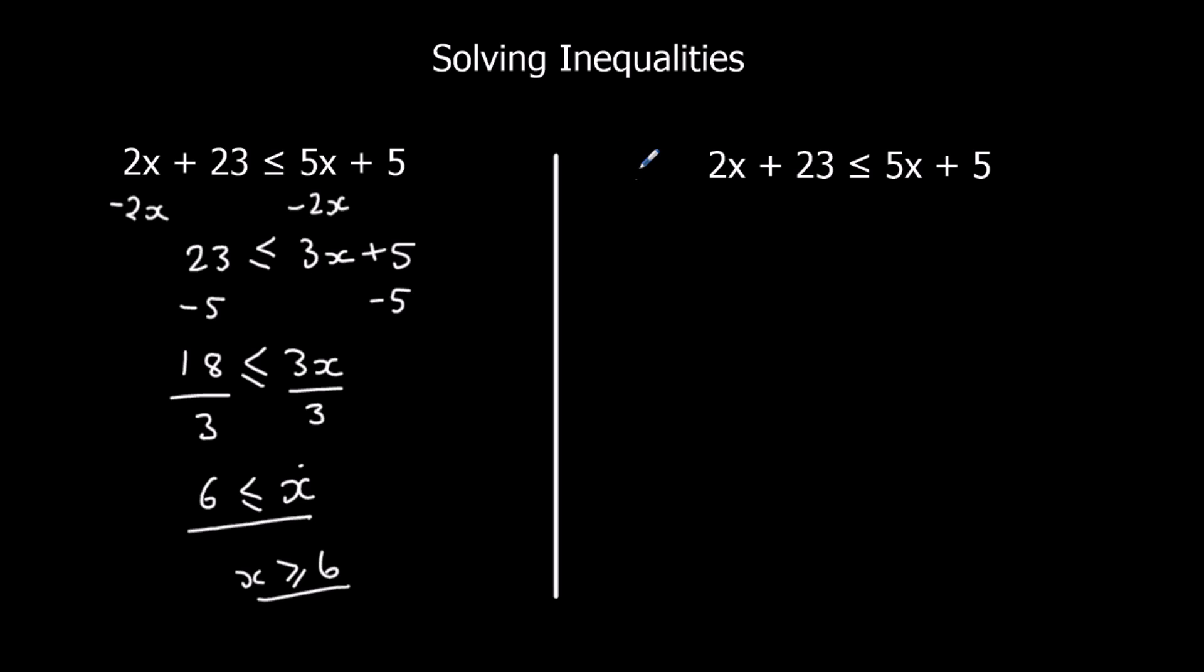But if you didn't do that, if you took away the 5x here and you've got a negative x, let's do it the other way around. So we're going to take 5x away from both sides. So minus 3x plus 23 is less than or equal to 5.